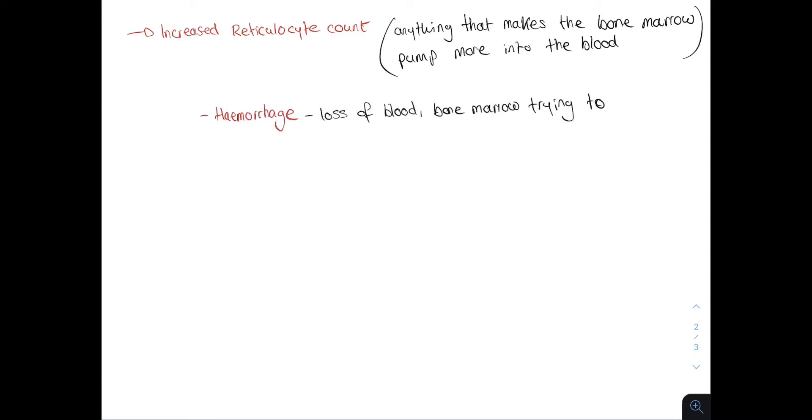On the other hand, causes of an increased reticulocyte count are those that increase bone marrow activity. For example, hemorrhage, where there is loss of blood and the bone marrow is trying to compensate by pumping more cells into circulation. Similarly, hemolysis, where there is loss of red blood cells, the bone marrow tries to pump more red cells into circulation and because it can't catch up with red blood cell loss, it ends up pumping premature red blood cells.